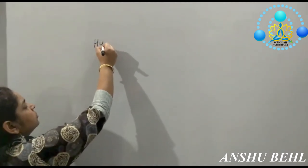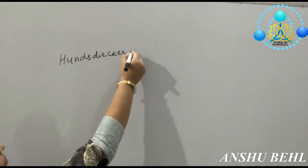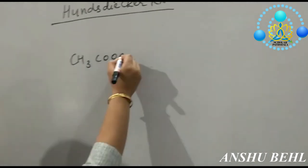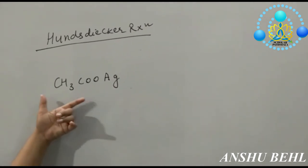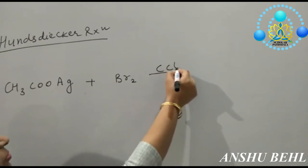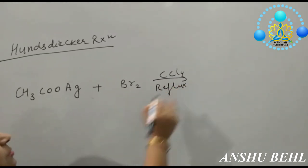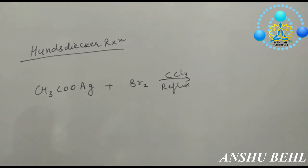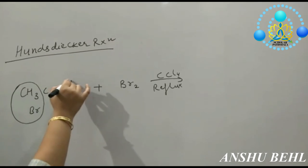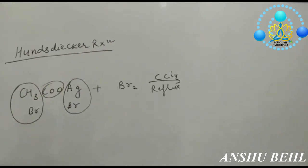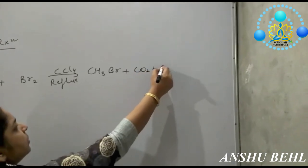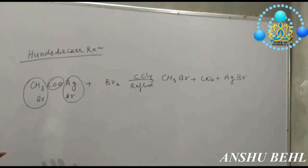The Hunsdiecker reaction: take the silver salt of a carboxylic acid (e.g., silver acetate), combine it with bromine in presence of carbon tetrachloride and reflux it. Break bromine as Br and Br. It forms CH3Br (methyl bromide), AgBr, and carbon dioxide. So the products are methyl bromide, carbon dioxide, and silver bromide. This is the Hunsdiecker reaction.